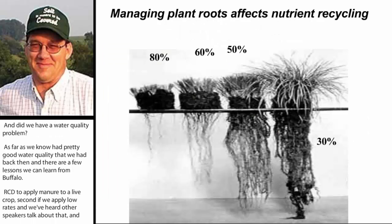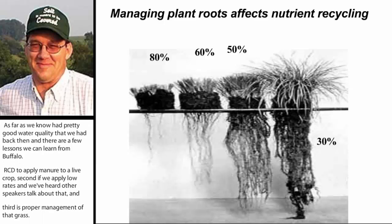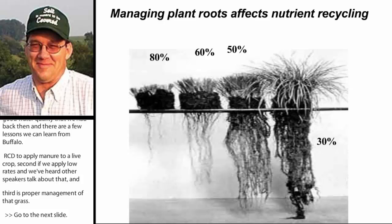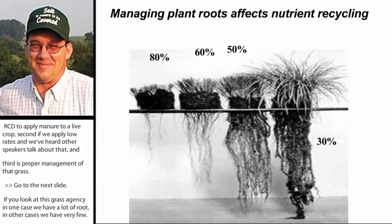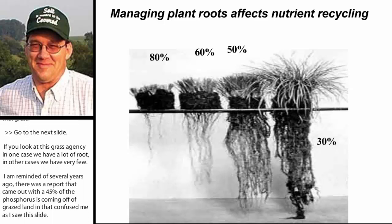If you look at this grass, you can see that in one case we have a lot of roots, and in another case very few. I'm reminded of a report that said 45% of the phosphorus is coming off grazed land. That confused me until I saw this slide. In cases where we have very little top growth, we'll get about 50% top growth and 50% below-ground growth. If the grasses are overgrazed, you're not going to have very many roots there.